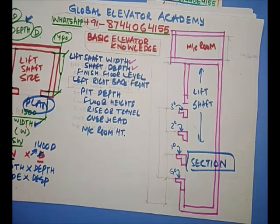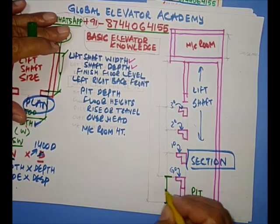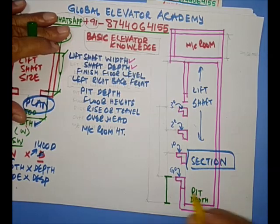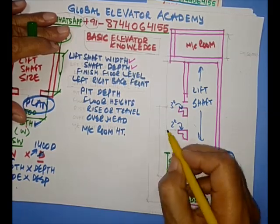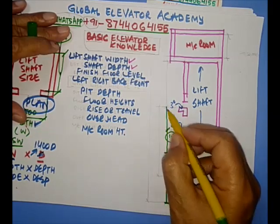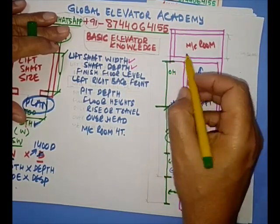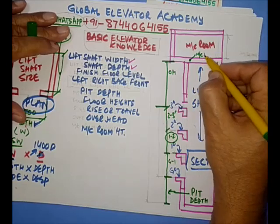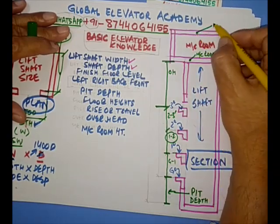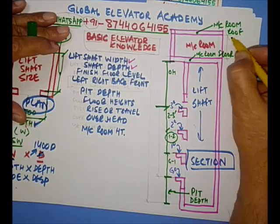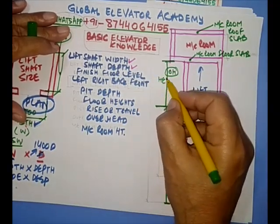So let's see what heights we have here. This one below is the pit — this is called pit depth. This dimension is the height between ground to first, this one is first to second, and this one is second to third. From here to here is called overhead. This is the machine room floor slab, and this is the machine room roof slab. This is overhead, and some people call it head room.